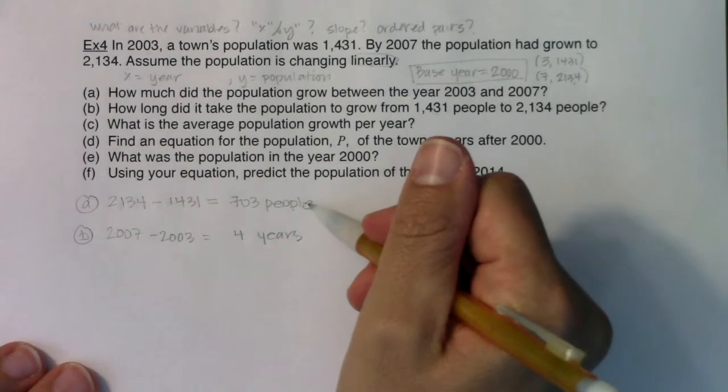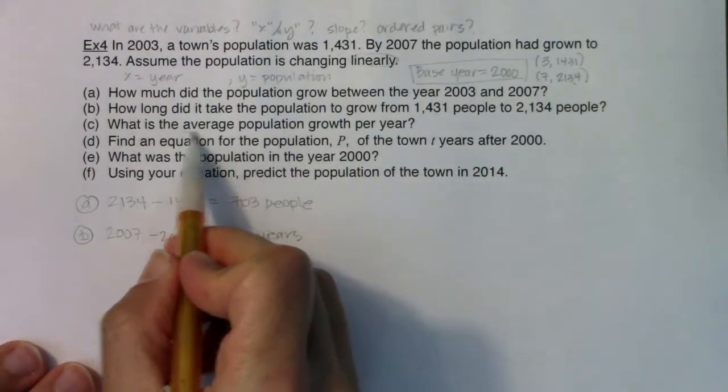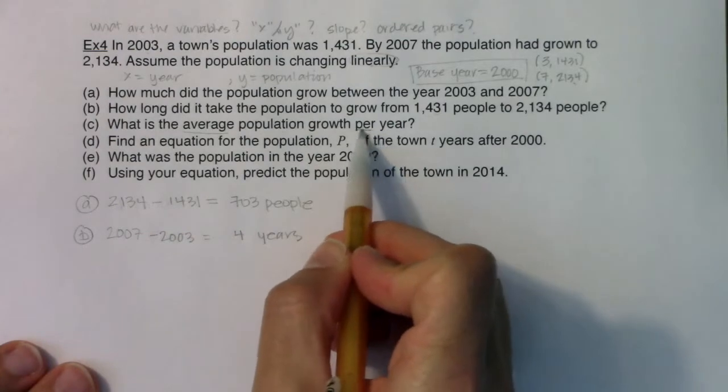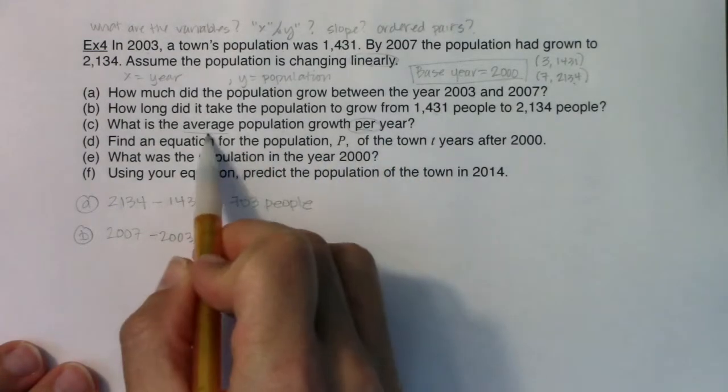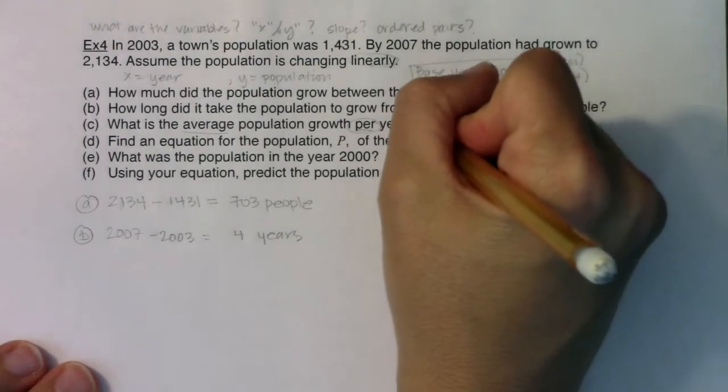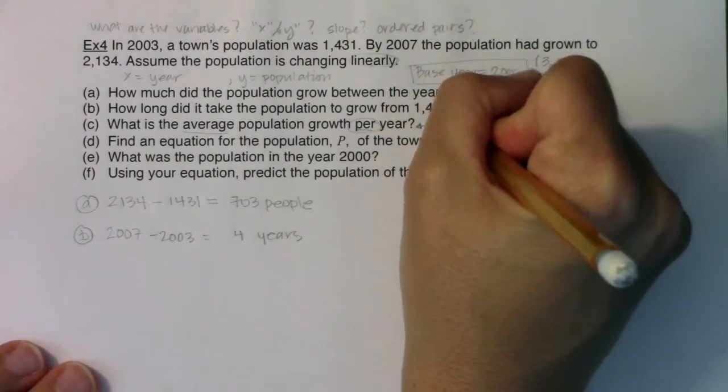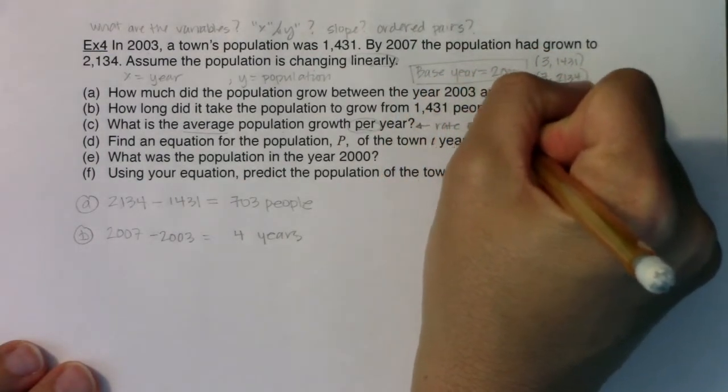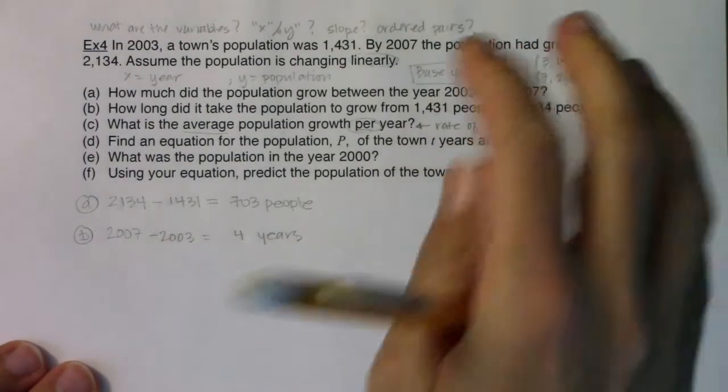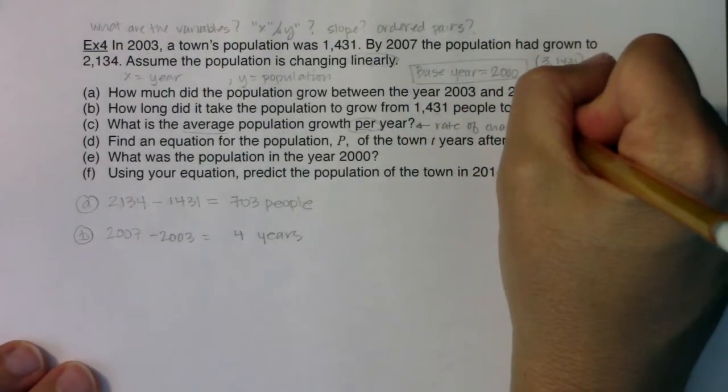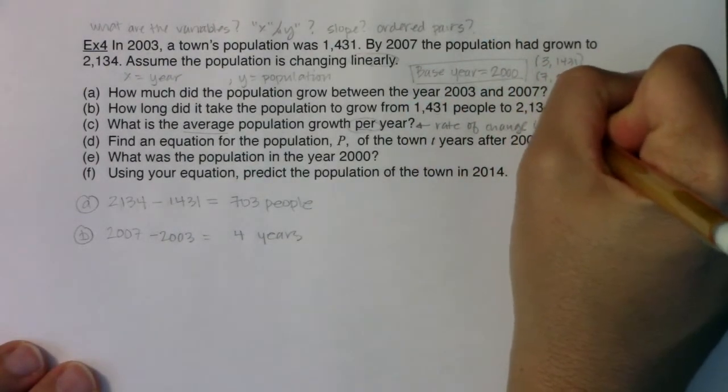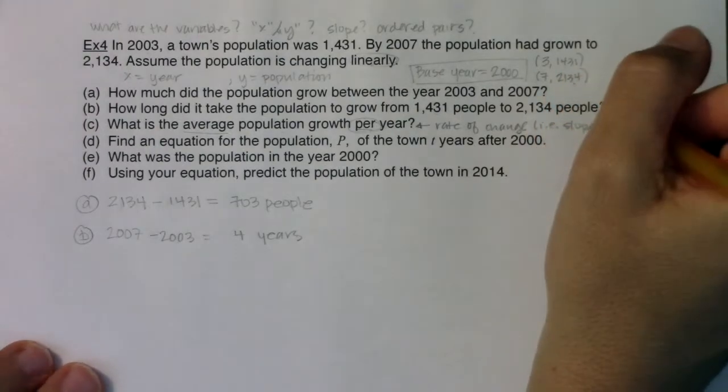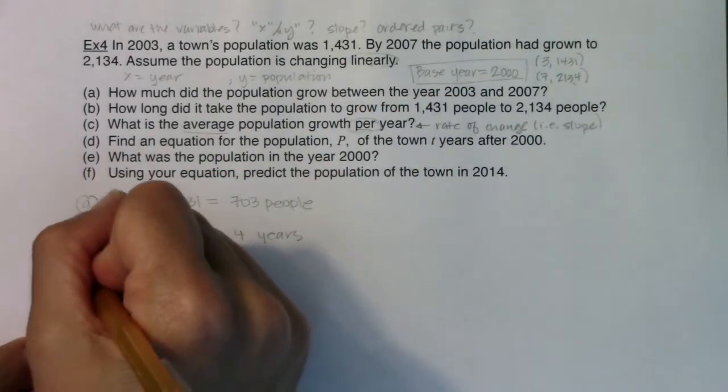What is the average population growth per year? I see the per and I see the average. This is a rate of change. Specifically, it's an average rate of change. They're asking me for the slope.